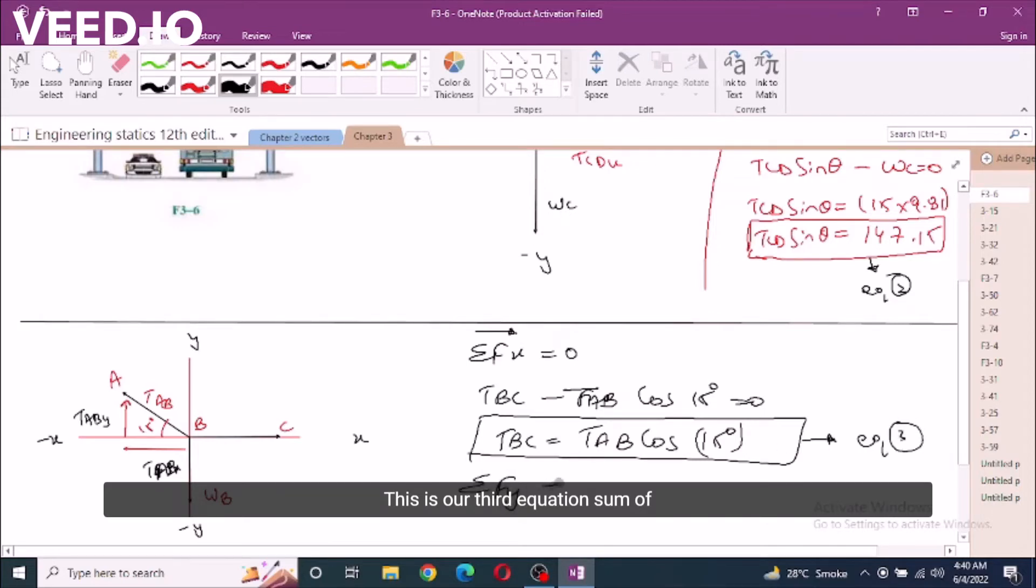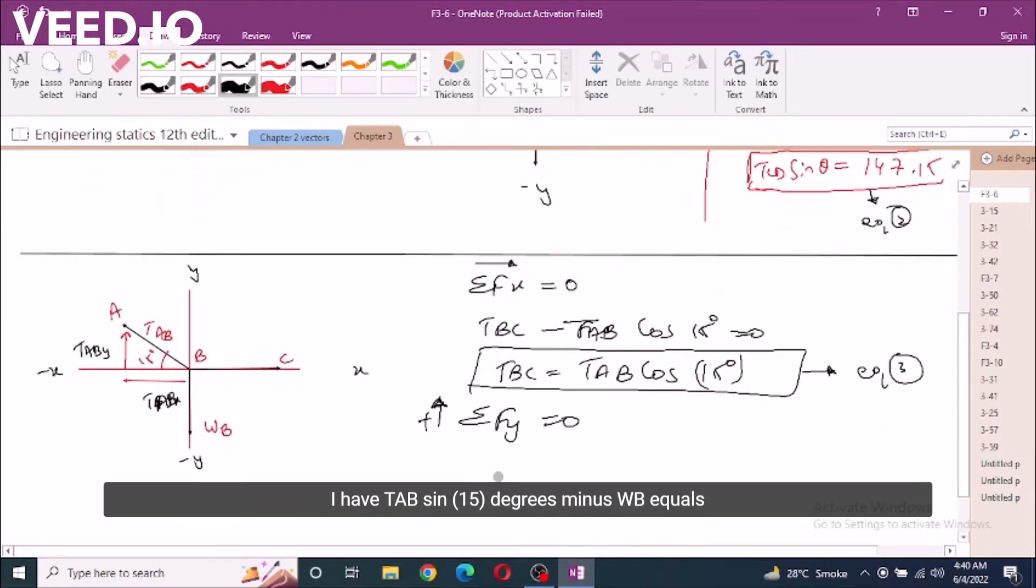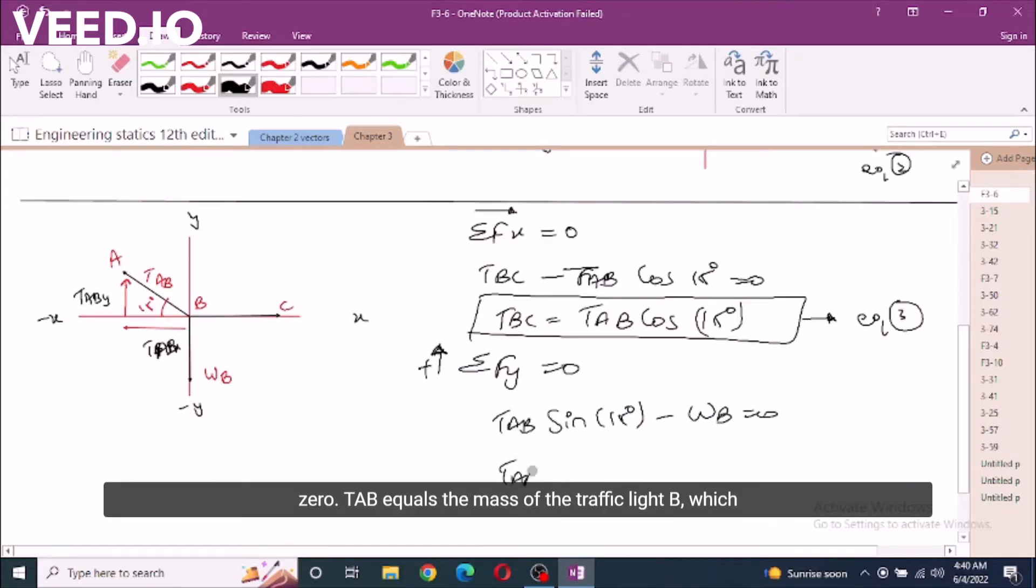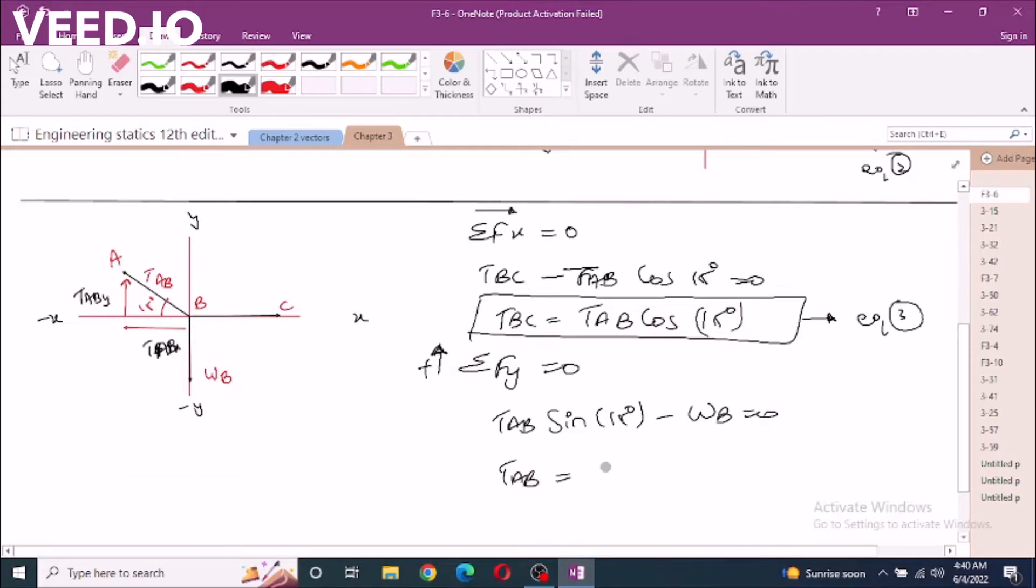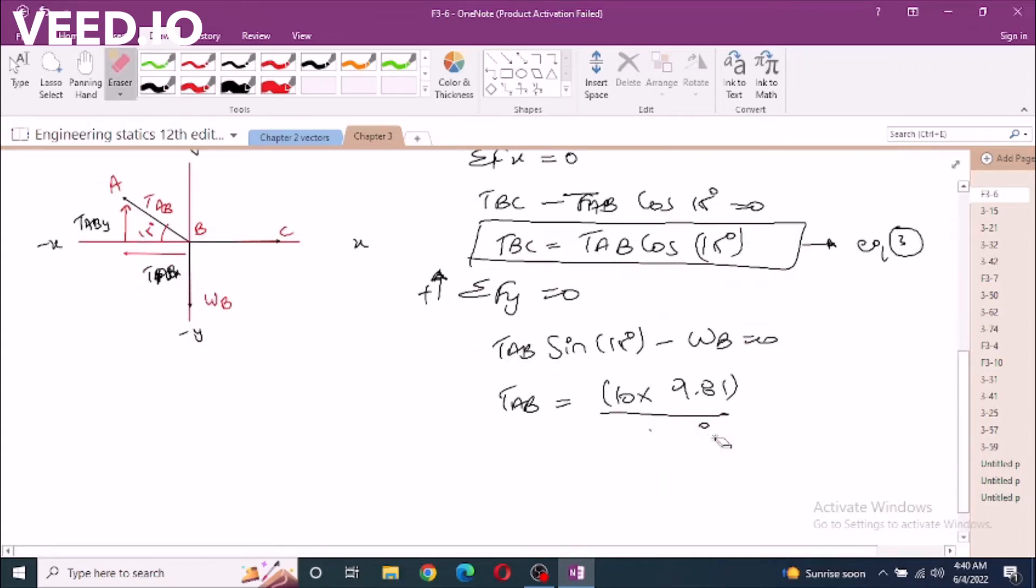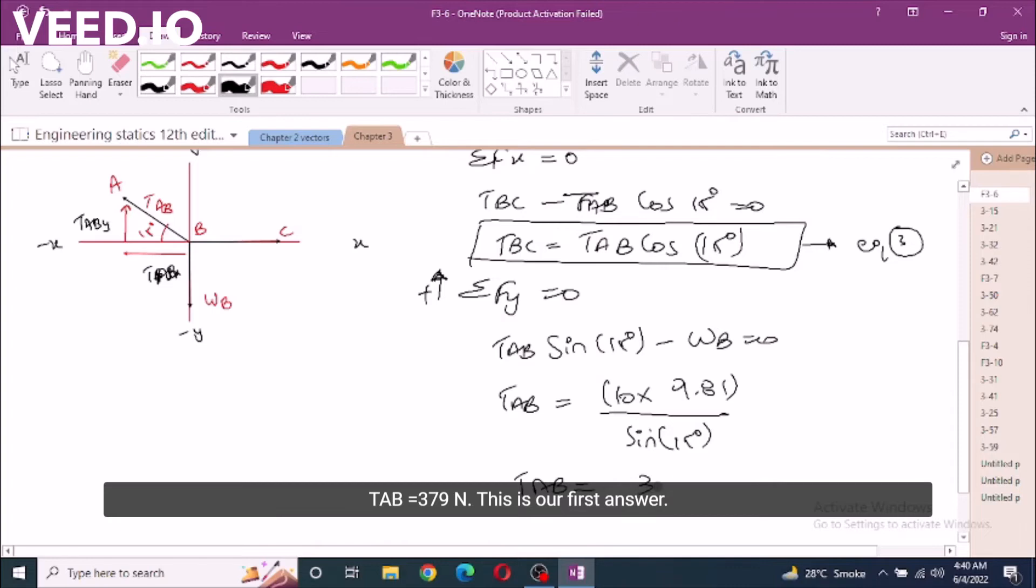Fourth equation is sum of forces in y direction equals zero. I have TAB sin 15 degrees minus WB equals zero. TAB equals the mass of the traffic light B which is 10 times 9.81 divided by sin 15. TAB equals 379 newtons. This is our first answer.